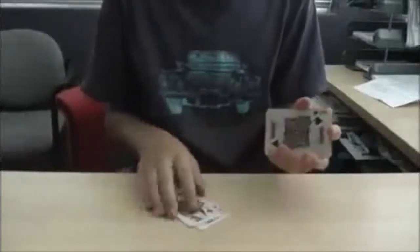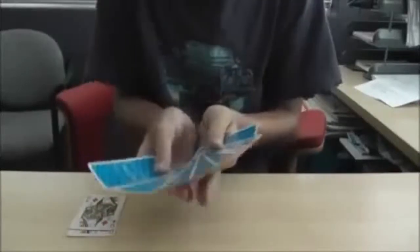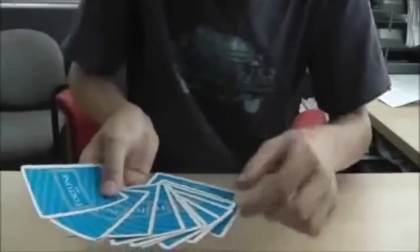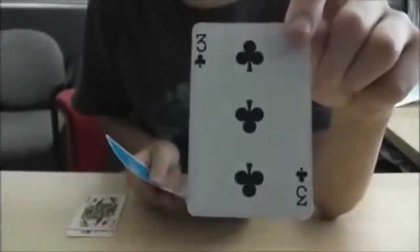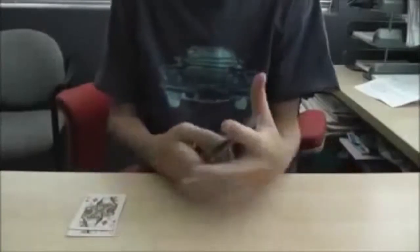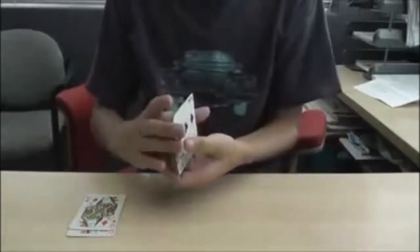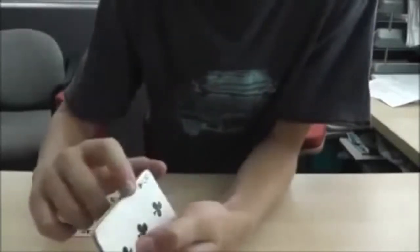All you have to do is put the queens aside for now and tell them to pick a card, any card. Good choice, that's a three of clubs. Tell them to put it on the bottom and close it back up. Then do a fake shuffle. Take the bottom and the top card and take them, but always keep their card on the bottom.